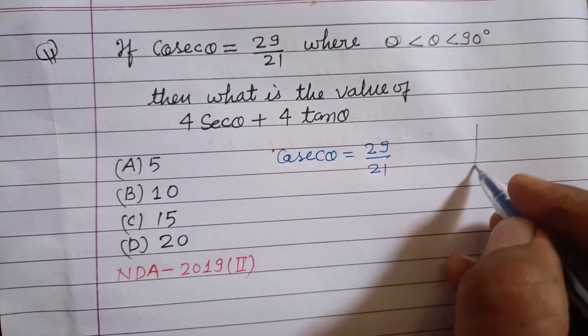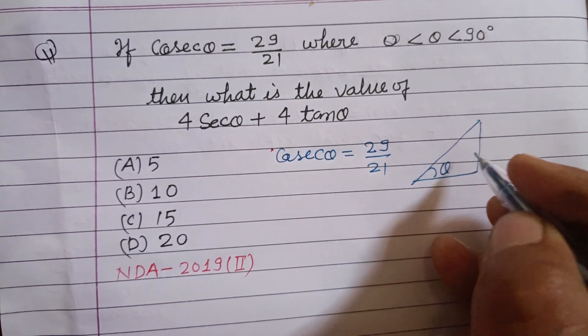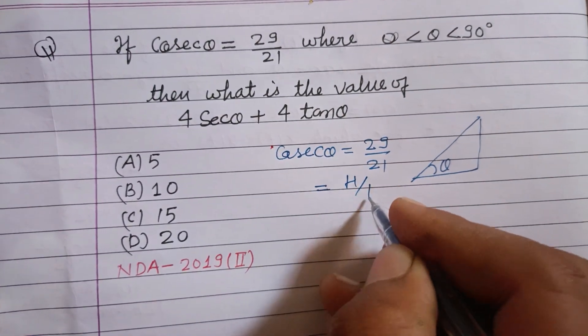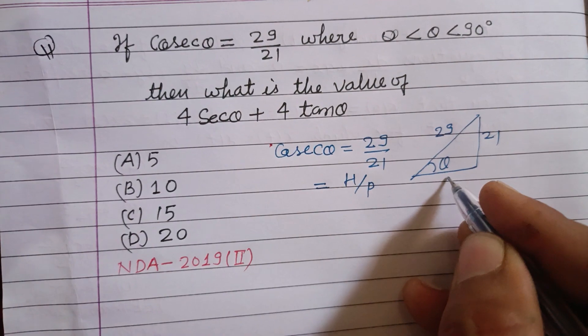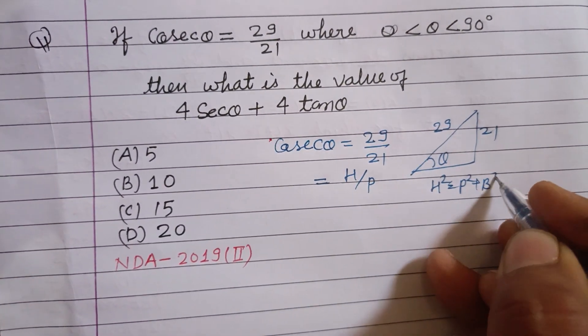So here's a right angle triangle, this is theta. You know that cosec θ is hypotenuse upon perpendicular, so this is 29, this is 21, and this is the base. You know that h squared equals p squared plus b squared.